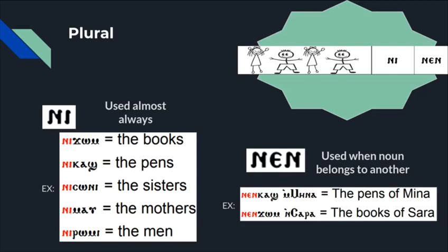Now in the plural form, the feminine and masculine nouns make no difference. Ni is used almost always to make nouns plural. For example, ni gom means the books, ni kash means the pens, ni soni means the sisters, ni mav means the mothers, ni romi means the men.